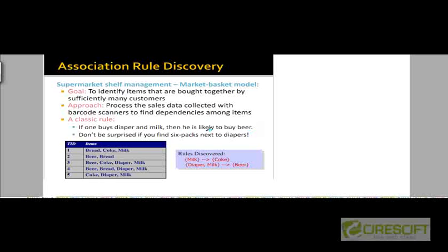One thing that the store could do is use these frequently occurring item sets in the transaction data to position items appropriately in the store, so that customers who are interested in buying diapers and milk will also be presented with beer in the same aisle or in a nearby location. By locating all these items together, you increase the likelihood that customers buying one or two items on the left-hand side of this rule will also buy the item on the right.